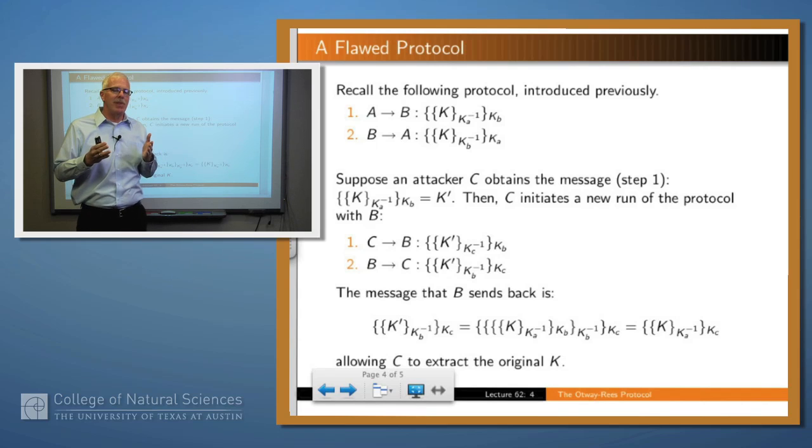The upshot is that effectively what you have is a value encrypted with four different layers of encryption. The two middle layers are encryption with B's public key and B's private key, and those cancel out because of the way these encryptions work.